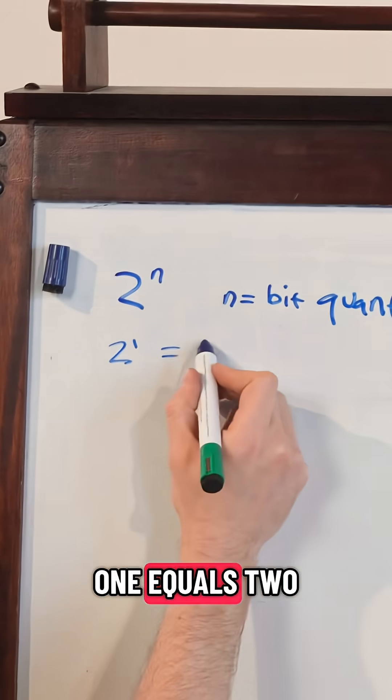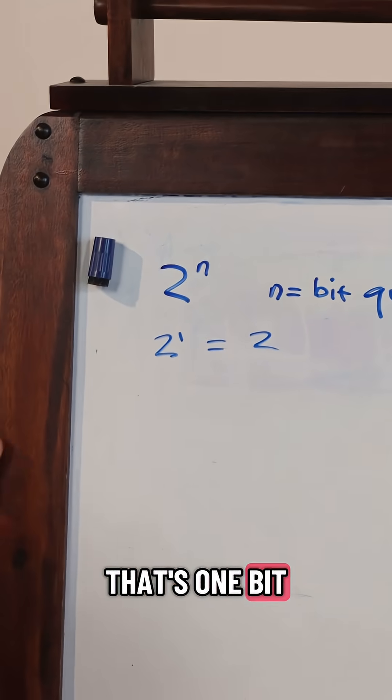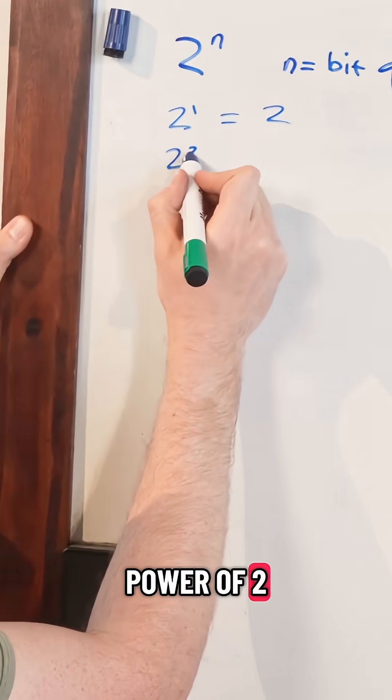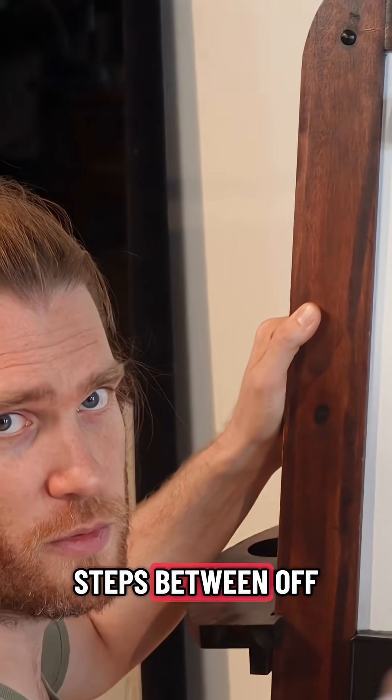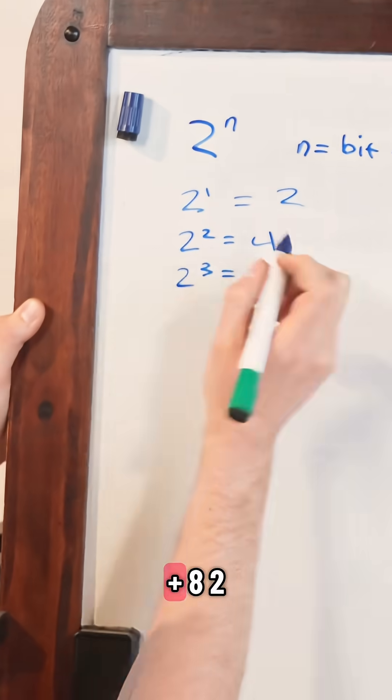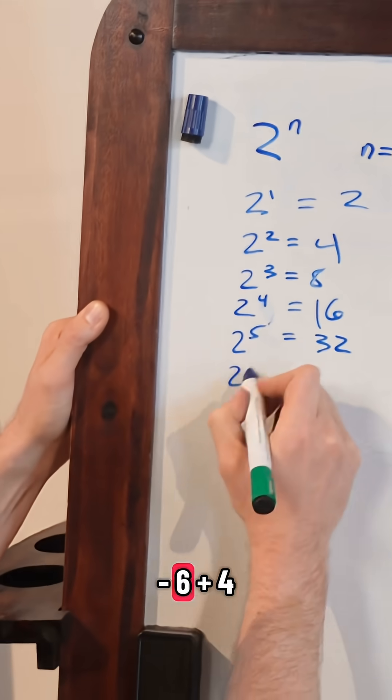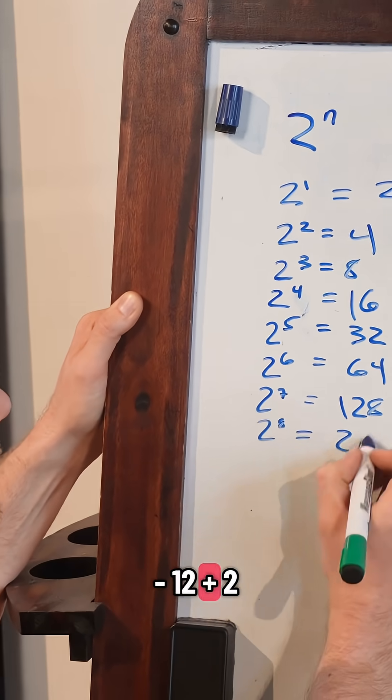So two to the power of one equals two. That's one bit. We have two steps, off or on. Two to the power of two equals four. There's four steps between off and on. Two to the power of three equals eight. Two to the power of four equals 16. Two to the power of five equals 32. Two to the power of six equals 64. Two to the power of seven equals 128. Two to the power of eight equals 256.